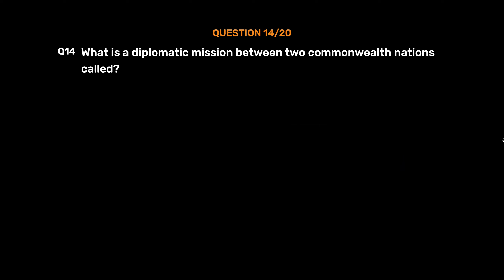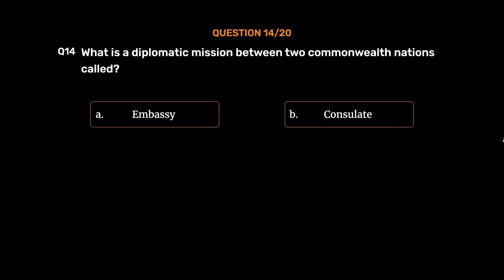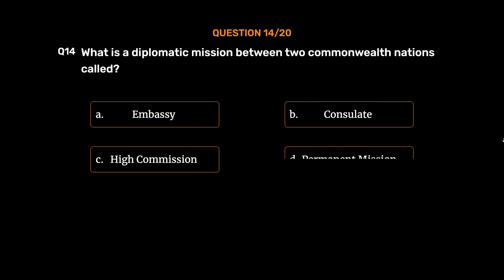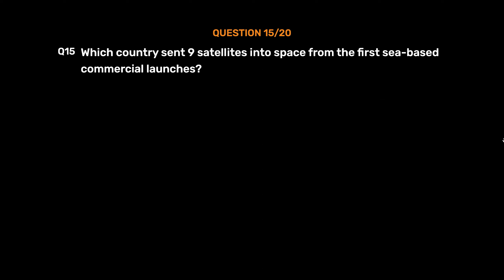Question No. 14: What is the diplomatic mission between two Commonwealth nations called? Option A: Embassy. Option B: Consulate. Option C: High Commission. Option D: Permanent Mission. The correct answer is Option C: High Commission.